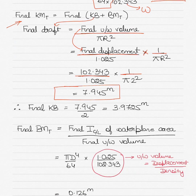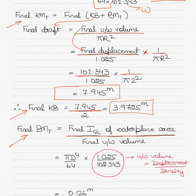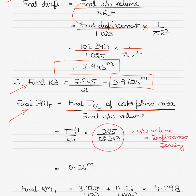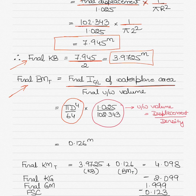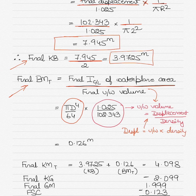KB always equals half the draft, so KB = draft ÷ 2 = 3.9725 meters. Final BM = moment of inertia of the waterplane area ÷ final underwater volume. For the cylindrical shape, moment of inertia = π·d⁴/64. The final underwater volume equals displacement ÷ density, so density moves to the numerator and displacement goes to the denominator in the BM formula.